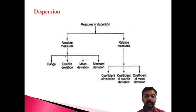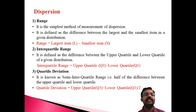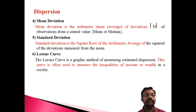Absolute measures and relative measures are both discussed. Range is the difference between the largest and smallest value; inter-quartile range is the difference between the upper quartile and lower quartile; quartile deviation is (Q3 − Q1) / 2; and we also covered mean deviation, standard deviation, and the Lorenz curve. Thank you for watching.